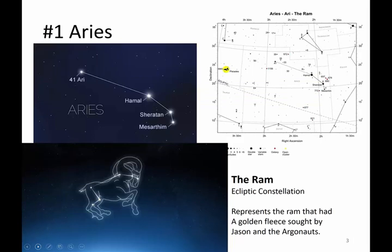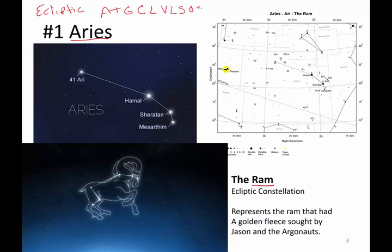The very first constellation we're going to talk about is Aries the Ram. As we begin our study of the constellations, we're going to go in the order of the ecliptic, and in the order of the mnemonic device: 'A Time Gone, Cowboys Loved Viewing Little Stars, Oh So Cold And Pretty.' So we're going to start with Aries, which is the A.